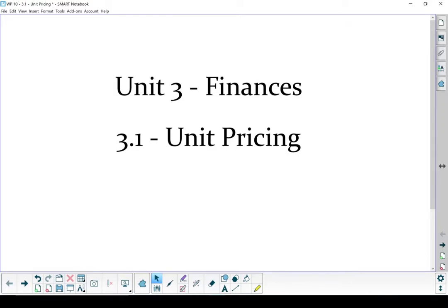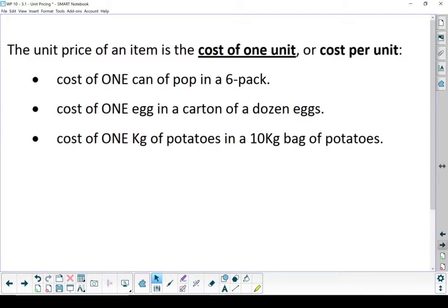Unit 3, Finances. Section 3.1, Unit Pricing. The unit price of an item is the cost of one unit, or the cost per unit.